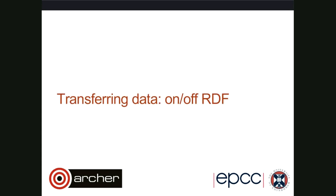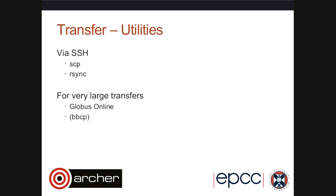Now transferring data — which is probably of key interest to people here with the upcoming end of service on Archer. The same rules apply: use archiving to minimise the number of files and think carefully about whether compression is helping or slowing you down — it's worth doing some tests. We're going to talk about SSH-based serial transfers using SCP, or SFTP if you prefer the FTP protocol, or rsync over SSH. For very large transfers, we'll talk about Globus Online. There is also a tool called BBCP, but I won't cover it in this webinar — there's information in the data management guide on the Archer website if you want to know about it.